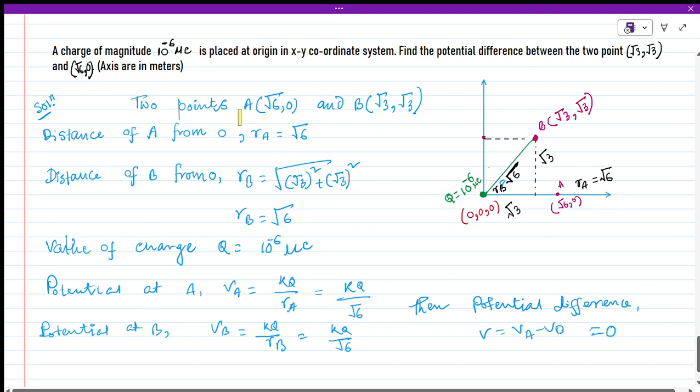A charge of magnitude 10^-6 microcoulombs is placed at origin in an xy coordinate system. Find the potential difference between the two points (√3, √3) and (√6, √6). Axes are in meters.